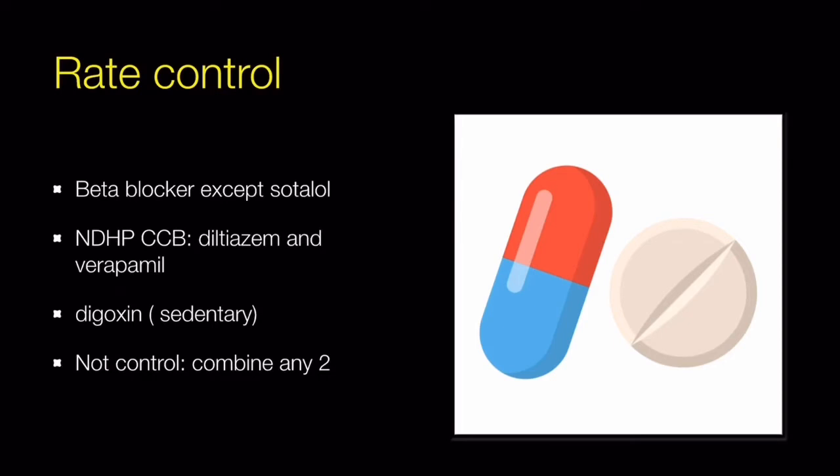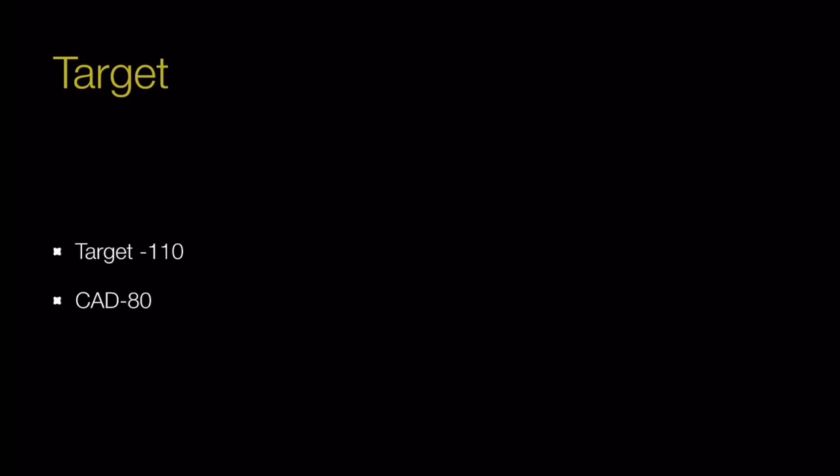Drugs used for rate control include beta blockers (except sotalol) and non-dihydropyridine calcium channel blockers like diltiazem and verapamil. If the patient's lifestyle is sedentary, we can use digoxin. If rate is not controlled with any single drug, we can combine them. The target heart rate is less than 110 per minute, and less than 80 beats per minute in coronary artery disease.